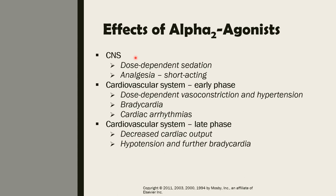In terms of the cardiovascular system, in the early phase of administration there is dose-dependent vasoconstriction and hypertension. Comparing this with atropine — for atropine, the reverse is true: at the early phase there is a temporary bradycardia, then the heart rate goes up. But in the case of alpha-2 agonists, there is vasoconstriction early on, and when there is vasoconstriction, there will also be hypertension.